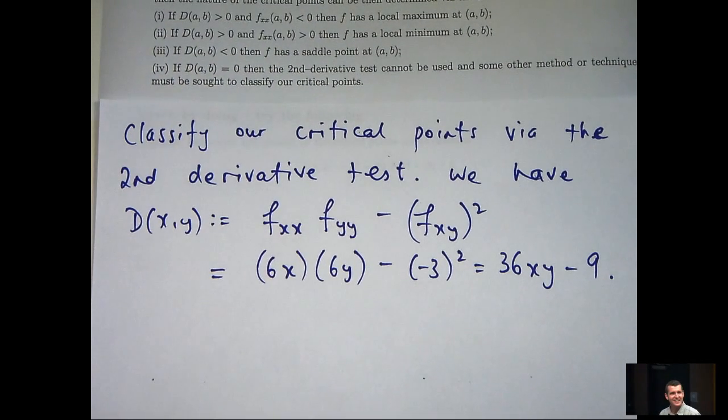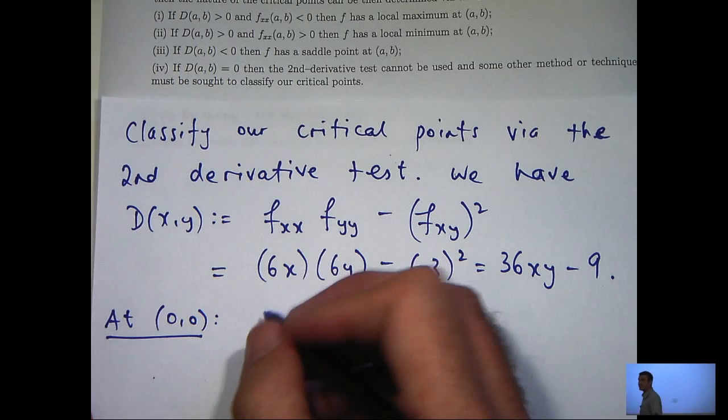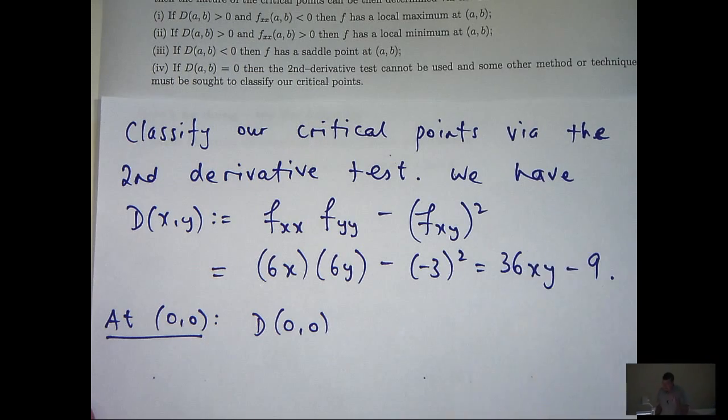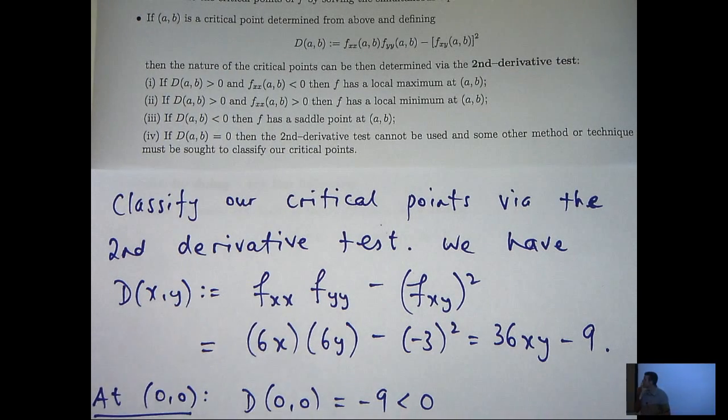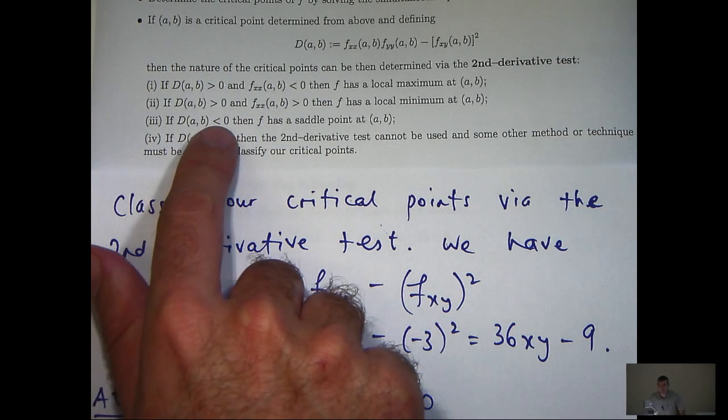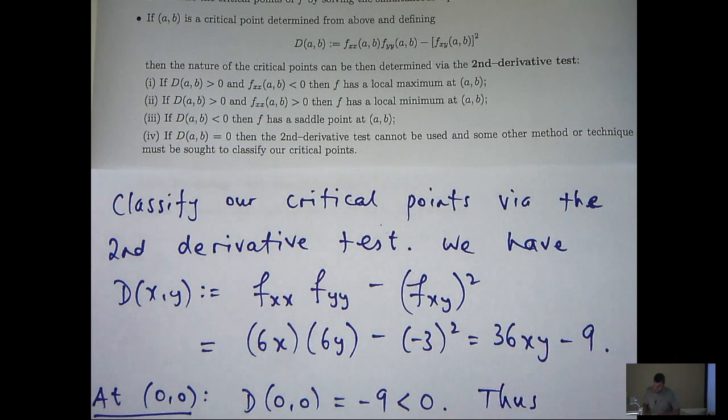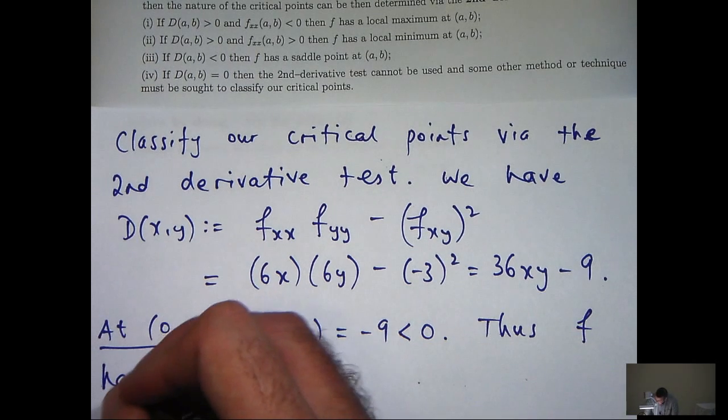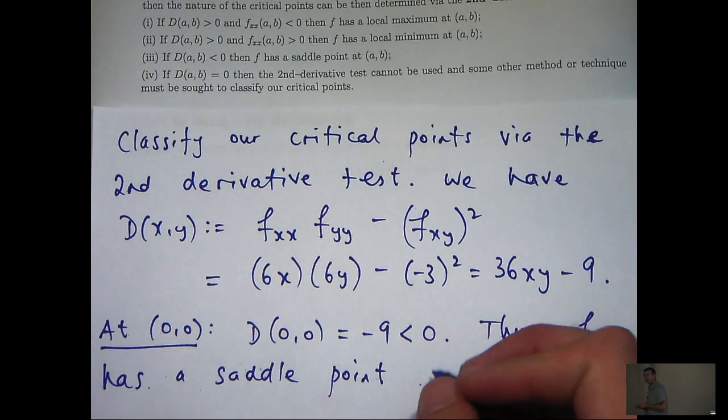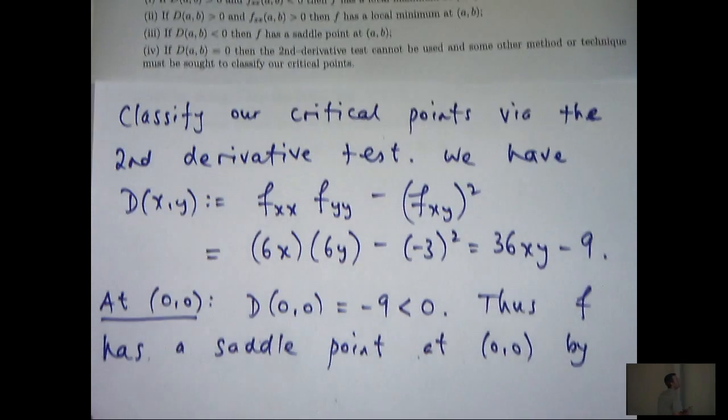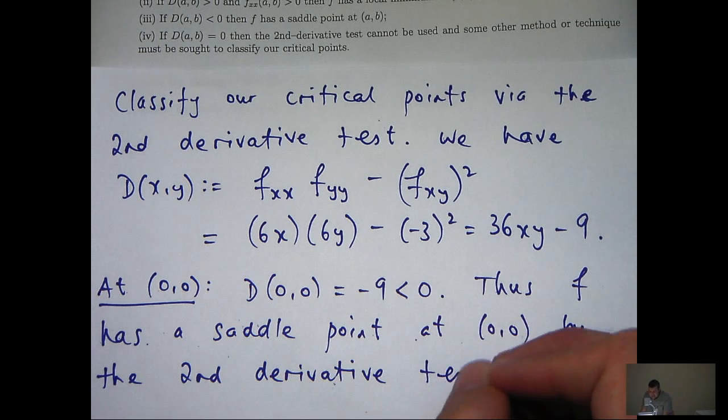Let's go to our first critical point (0, 0) and test this d. If I sub in x equals 0, y equals 0, I'll get 0 here and I'll get minus 9. That's negative. Let's go to our second derivative test and see if we can make some conclusion. If we look at part 3, if this d is negative, then f has a saddle point. So we conclude that f has a saddle point, which is kind of like a general point of inflection.